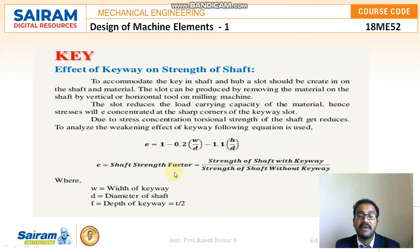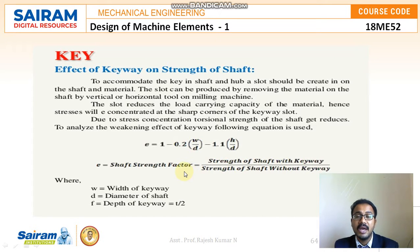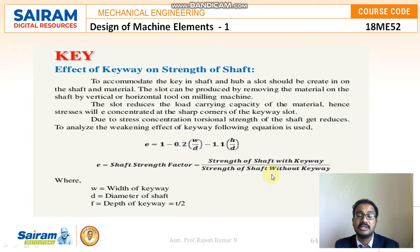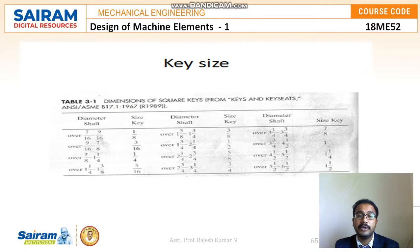Here E is the shaft strength factor, defined as the strength of the shaft with a keyway divided by the strength of the shaft without a keyway. To find the strength factor we compare the shaft with and without the keyway groove. W is the width of the keyway, D is the diameter of the shaft, and H is the depth of the keyway, which equals t/2.